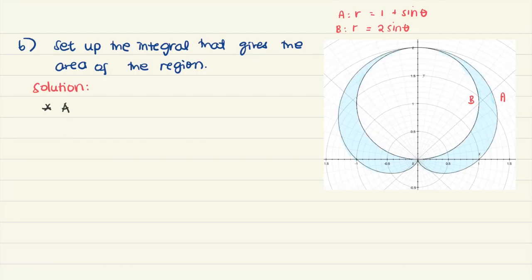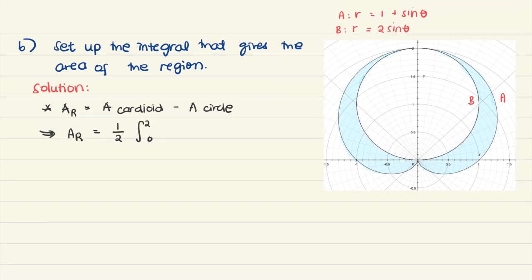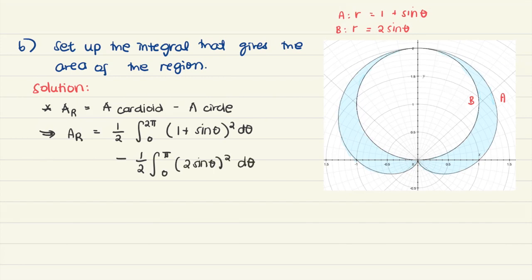For the area of the region, we notice that the cardioid is larger than the circle — the circle lies inside the cardioid. So we can simply subtract the area of the circle from the area of the whole cardioid. The area of the region is half the integral from 0 to 2 pi of 1 plus sine theta quantity squared d theta, minus half the integral from 0 to pi of 2 sine theta quantity squared d theta. The 0 to 2 pi is because the cardioid is drawn from 0 to 2 pi, and 0 to pi because the circle is drawn from 0 to pi.